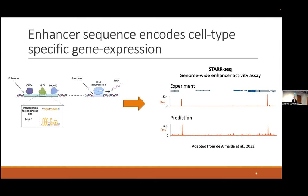We wanted to see whether or not these neural networks were learning true biology in enhancers. In our lab, we study enhancers — these are DNA regulatory sequences that drive cell-type specific gene expression. They are mediated through the binding of transcription factors, which recognize specific sequence patterns known as motifs. A specific instance of a motif I'm referring to as a transcription factor binding site. We also have access to genome-wide functional assays, such as the STARseq assay, which is quite popular.